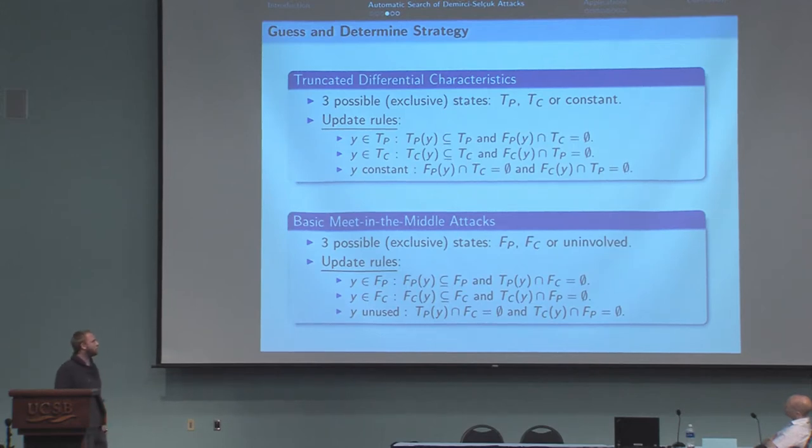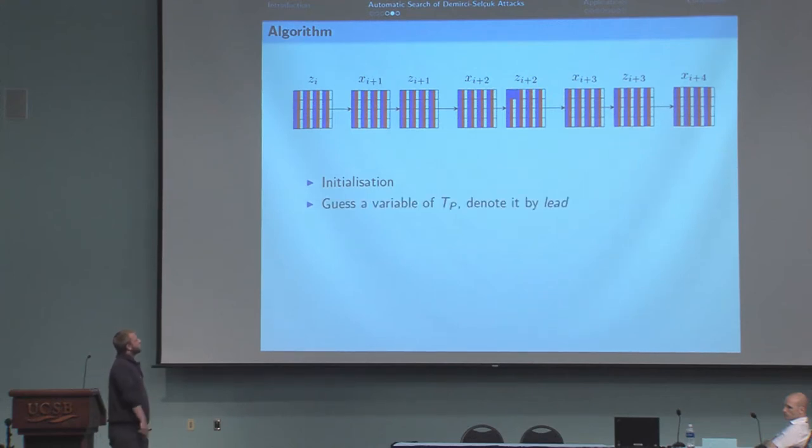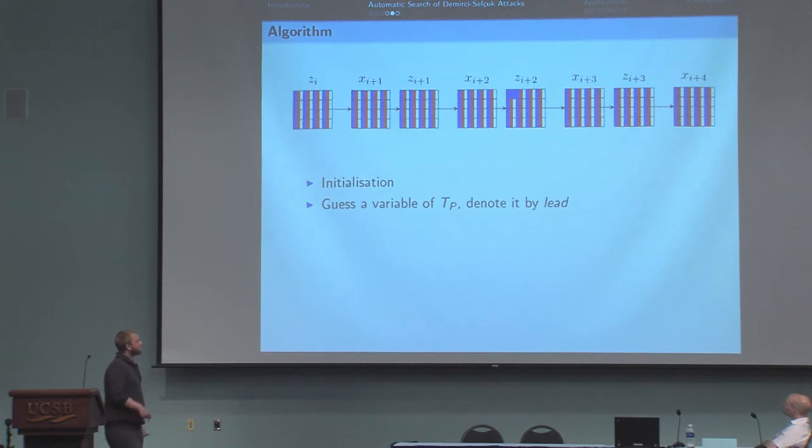I'll show you an example on how we perform the search. First, there is an initialization where all state variables can pick all possible states. Then, we pick at random one variable and, for instance, we guess that it belongs to TP. It means that it will be an active variable and its difference will be propagated with probability 1 to the plaintext. We apply the update rules and deduce many variables that will also be in the set TP.